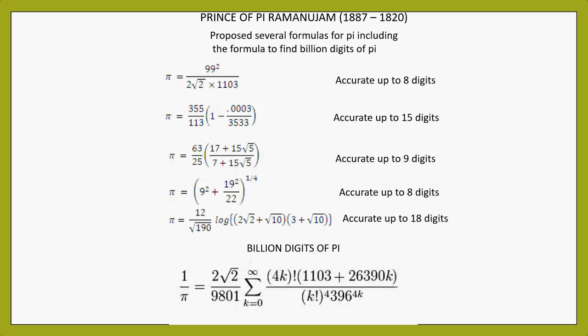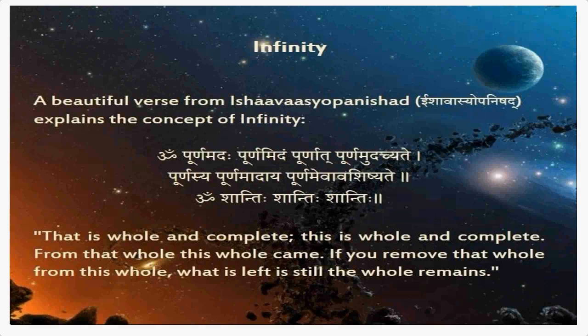Without mentioning Ramanujan, I can't end this lecture because he is the father of Pi. His contribution - we still don't know how his work is, any work you take, any formula you take, it reveals something different. These are several formulas of Pi given by Ramanujan. Different series were there. Each series, nowadays in astronomy also, Ramanujan series is applied in the work of black holes. Finally, I will end this lecture with this.